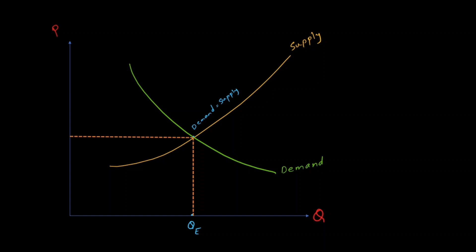Now consider the opposite situation. Coming back to the graph at equilibrium, quantity demanded is exactly equal to quantity supplied. When the price decreases and falls below the equilibrium price, this is not favorable for sellers because lower price means lower profits. Not many sellers would be willing to sell a high quantity at this price, so the quantity supplied gradually starts decreasing. On the other hand, buyers are very happy — with a lower price they can buy more, leading to an increase in quantity demanded. The result is that quantity supplied is less and quantity demanded is more, leading to a shortage.